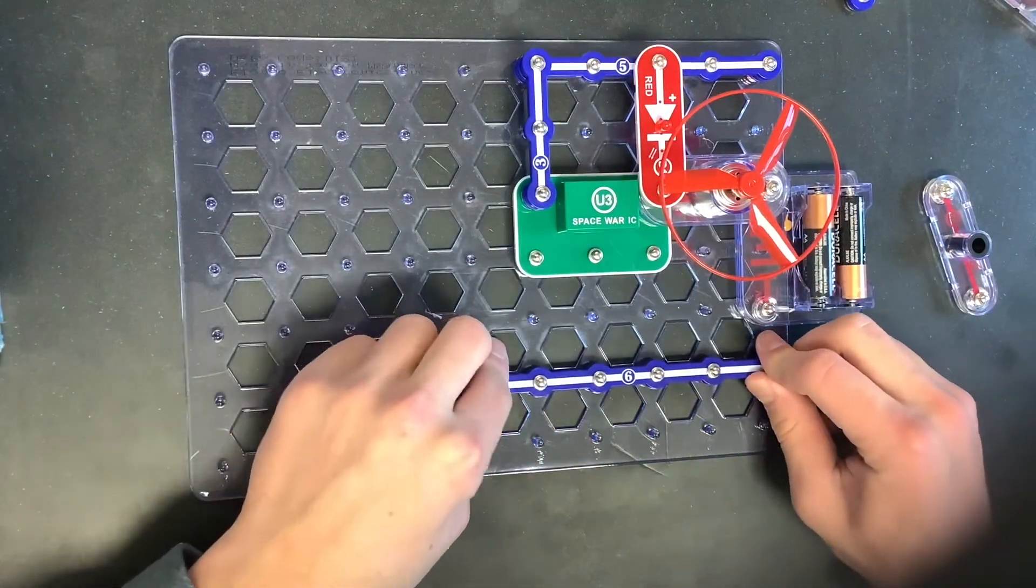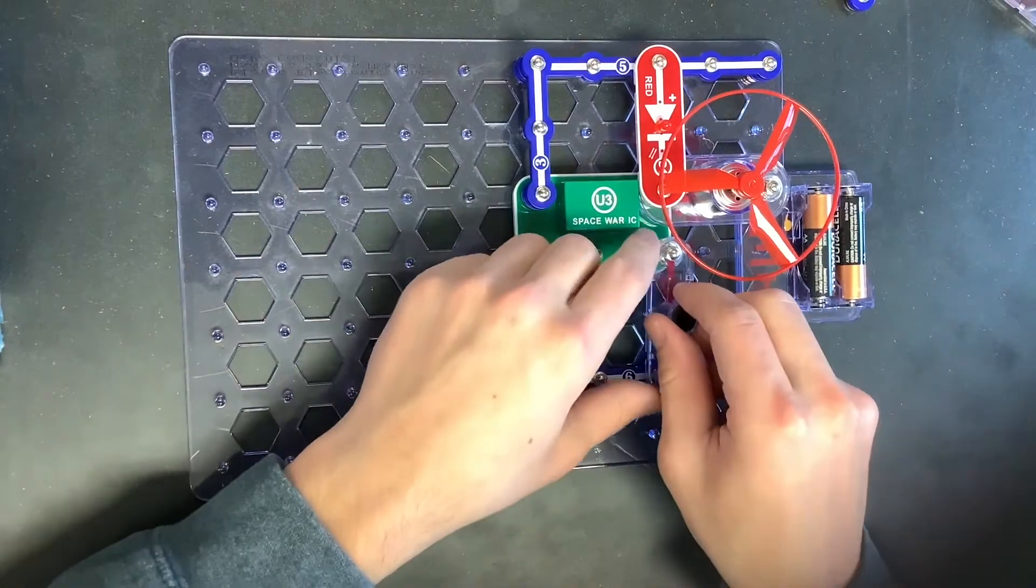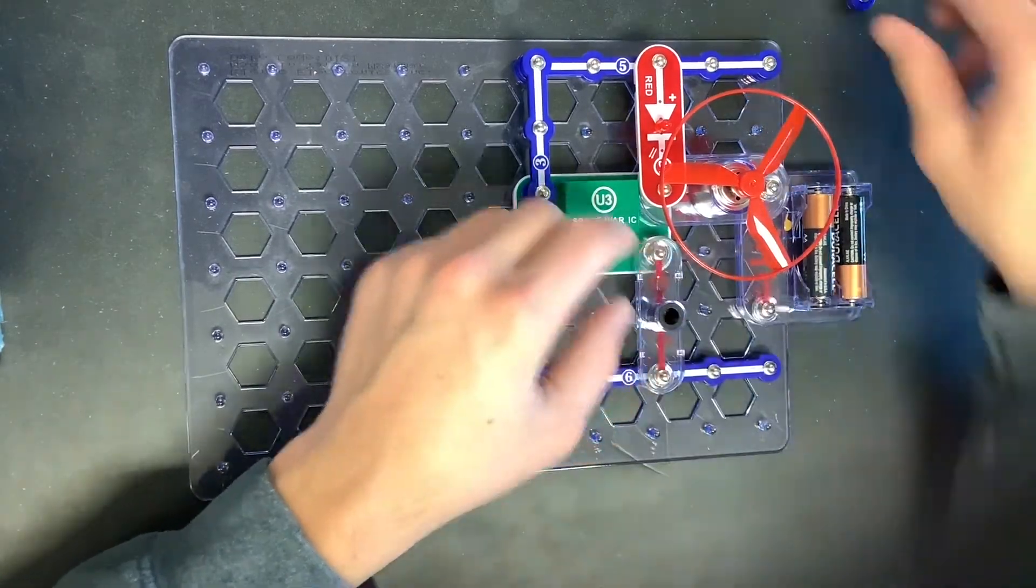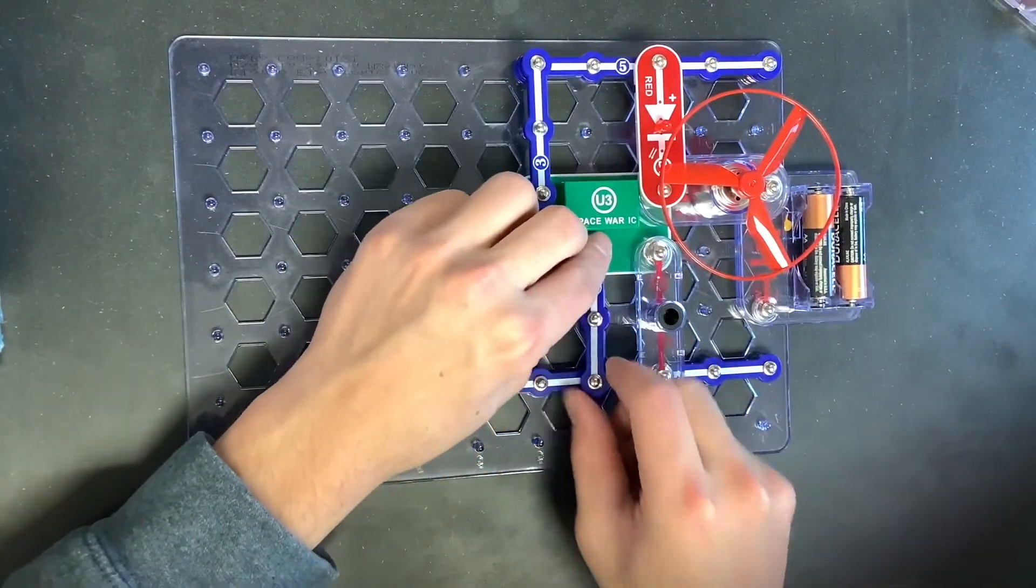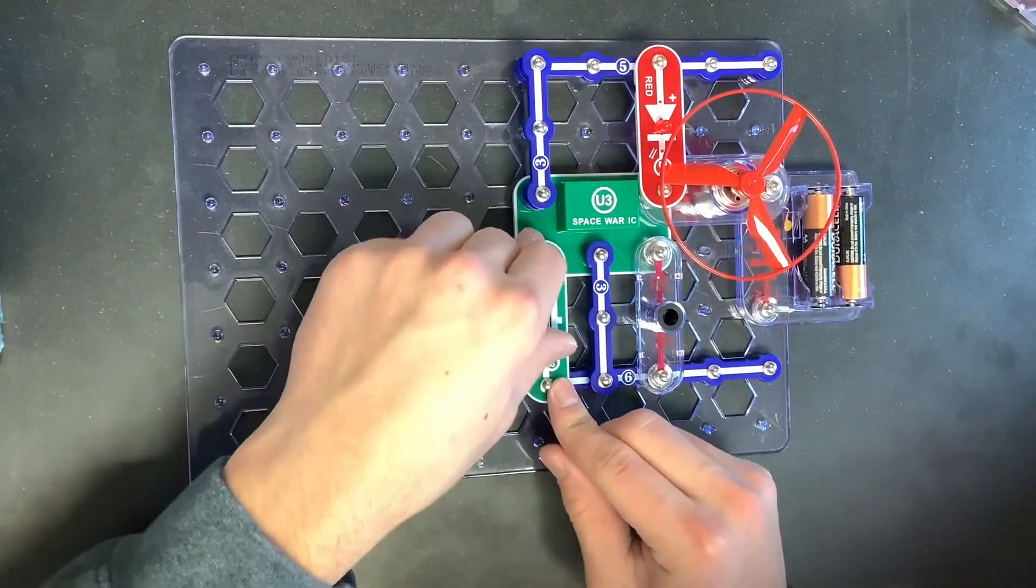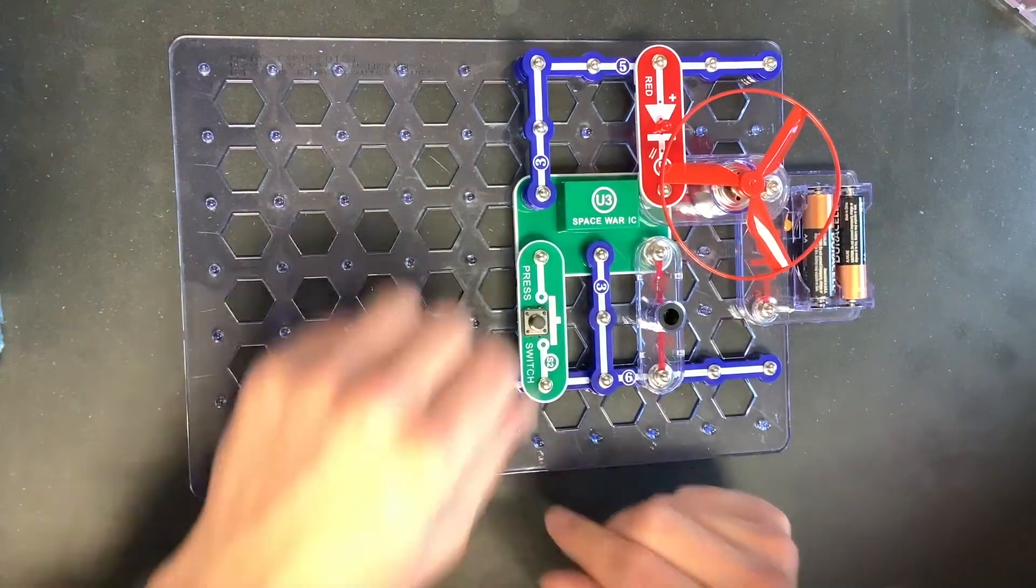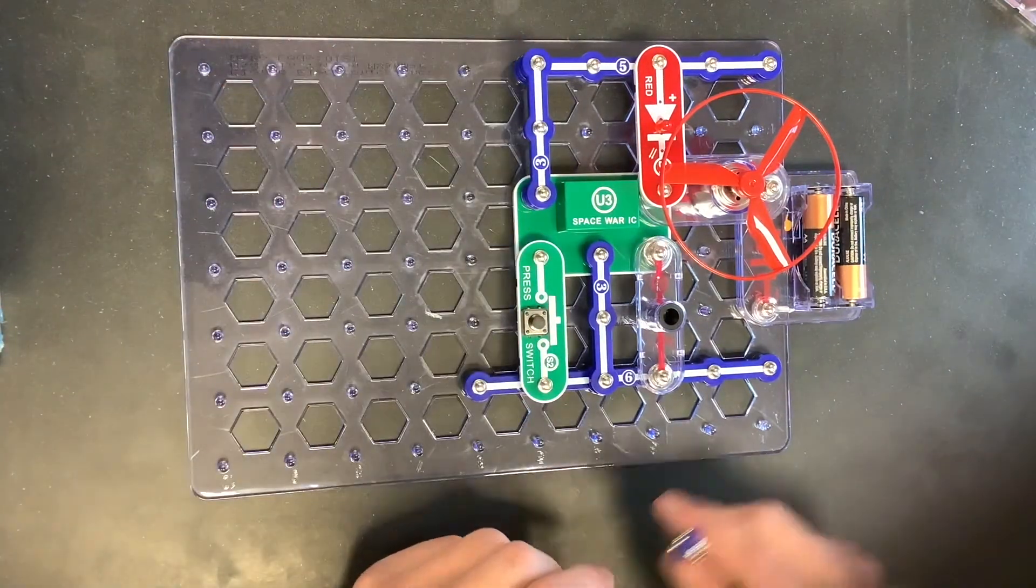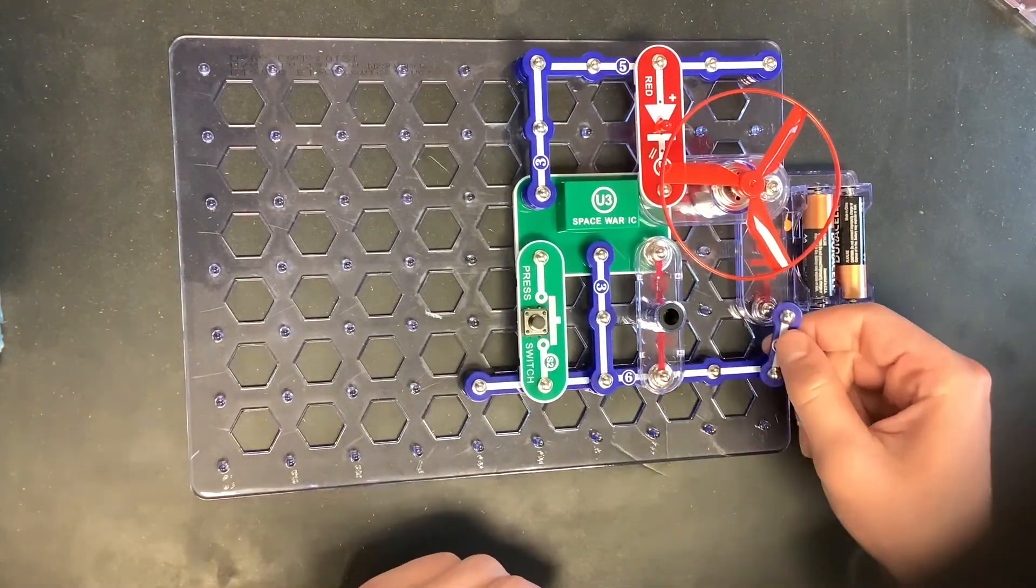Then we're going to add another single dot right here and connect that. Then we're going to use our six-piece connector right here. We're going to connect the photoreceptor, the three-piece connector, and then we're also going to connect a switch.